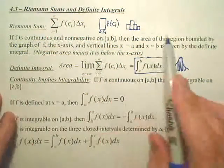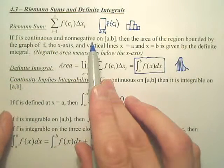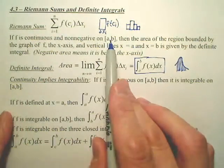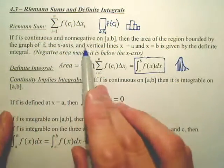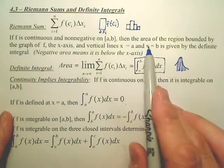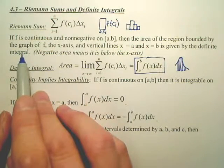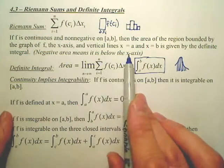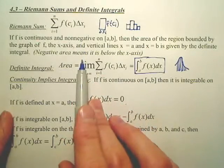Going back to this — it's wordy, but if F is continuous and non-negative, meaning if my function does not have any negative outputs and it's continuous on the closed interval A to B, then the area of the region bounded by the graph of F, the X axis, and the vertical lines X equals A and X equals B is given by the definite integral. Negative area means it's always below the X axis — that's why it says non-negative.